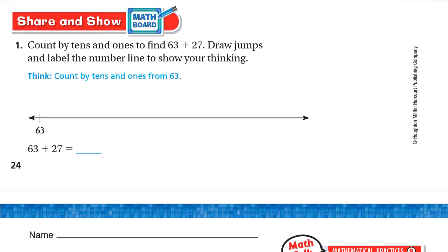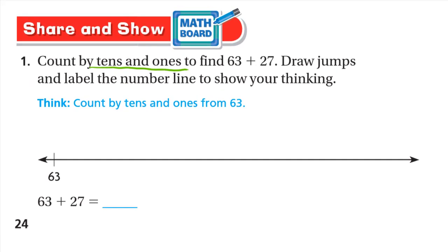Now for share and show. Count by tens and ones to find 63 plus 27. Draw jumps and label the number line to show your thinking. Like we said, we start from the bigger number, which is 63. So we'll start with the 63 and we need to add 27. We can add the 20, 10 by 10. So 63. After 10, it will be 73. So we added 10. It becomes 73. We can add one more 10.